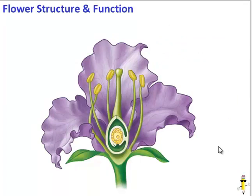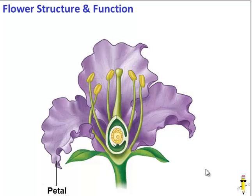Here is a typical flower. We can see the petal, which is often brightly colored to attract insects and other animals as pollinators — more about that later. There's also the sepal, which is green and protects the flower when it's closed.